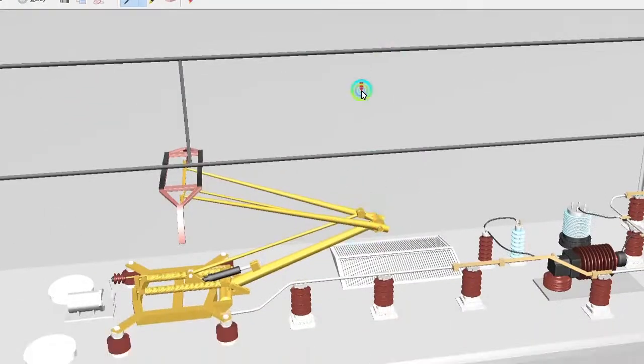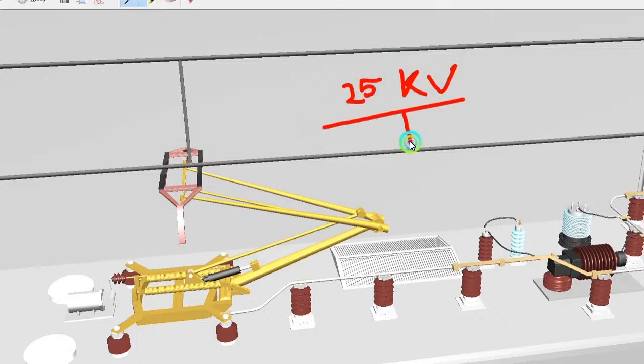So 25 kV. This contact wire continuously flows. So here, do you know the electron? Electron, that is E. Electron.